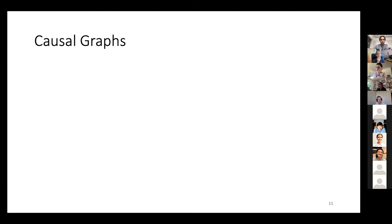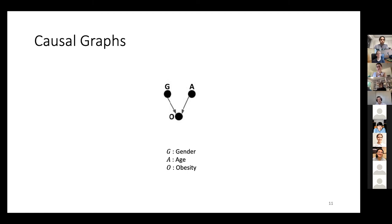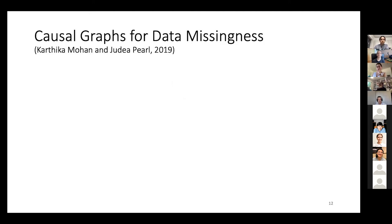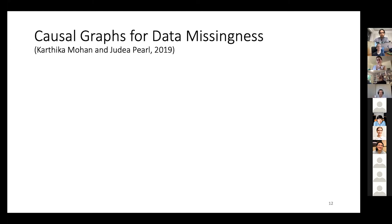Let me give a quick introduction to causal graphs. Causal graphs are probabilistic graphical models used to encode assumptions about the data generation process. For example, to represent the causal relationship between gender, age, and obesity — assuming both gender and age have a causal relation with obesity — we use a causal graph where edges represent the causal relations. When there is missingness in the training data, Karthika Mohan and Judea Pearl proposed an elegant framework for representing the missingness mechanism through causal graphs.